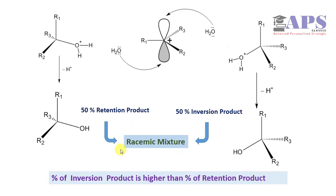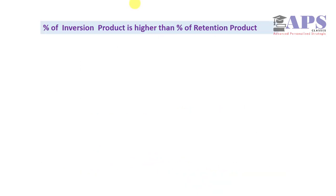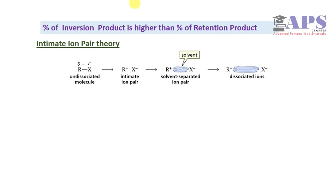But many experiments show that percentage of inversion product is higher than percentage of retention product. This can be explained by intimate ion pair theory.